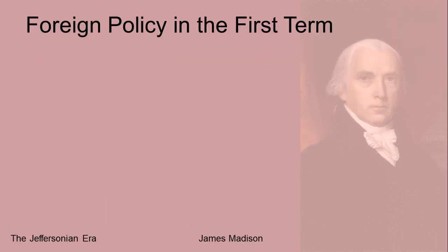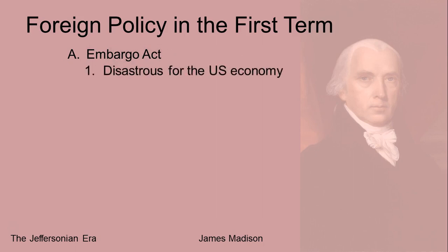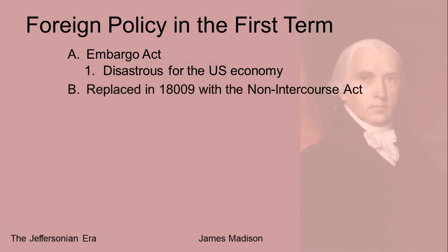In terms of foreign policy, the problems go all the way back to the ongoing disputes with Britain and France that Jefferson had also faced. Jefferson had tried to deal with those problems with the Embargo Act — refusing to trade with anyone — and that was a complete disaster. Trade accounted for so much of the U.S. economy, and all of a sudden sailors and merchants were out of work. To get out of that, the Embargo Act was replaced in 1809 with something called the Non-Intercourse Act, which was basically like the Embargo Act except instead of refusing to trade with the entire world, it said the U.S. would not trade with Britain or France specifically.